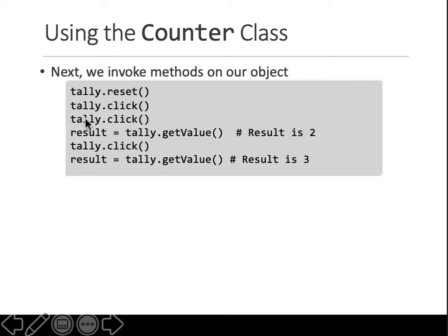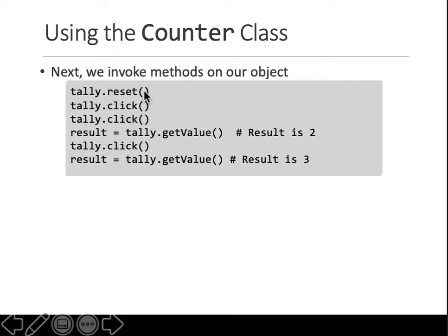The object does not need to worry about how that happens. So we are telling the instance called tally to just click the counter. These two methods — one resets the tally, and clicking it twice means the counter value goes from zero to one to two. When you call get value, the variable result should have two in it because you've clicked it twice. If you click again and call get value, you'll get an updated value.